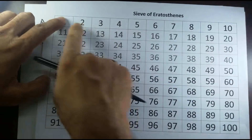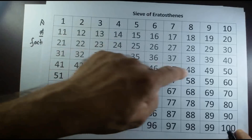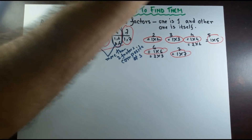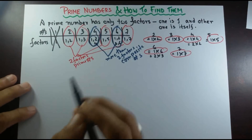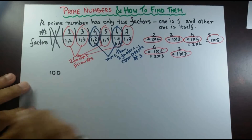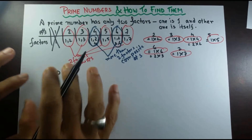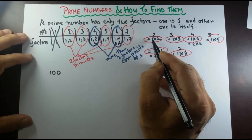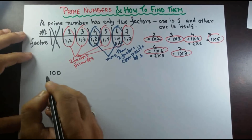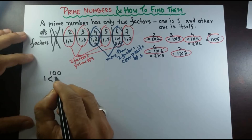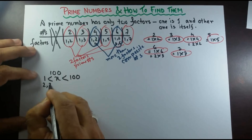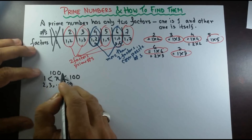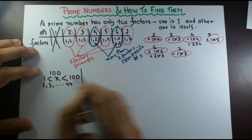You can make a grid like that and try this yourself. Cancel out 1 and circle these four numbers — 2, 3, 5, and 7 — then cancel out all numbers that are multiples of these. You'll find all the prime numbers from 1 to 100. There are 25 prime numbers from 1 to 100. Now let's think about a bigger number. How do we find out if 100 is a prime number or not? We already know 100 is a composite number, but let's see how we can find that out.